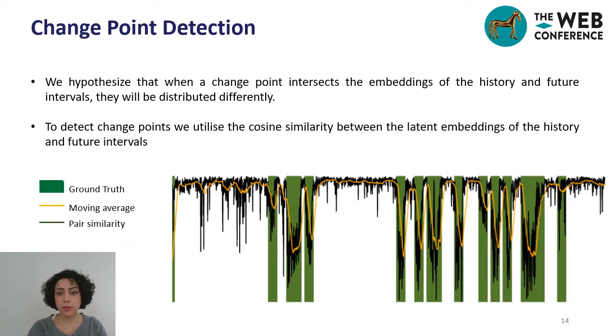We hypothesize that when a change point occurs at either history or future interval, they will be distributed differently. To detect change points, we utilize the cosine similarity between the predicted latent embeddings based on history and future intervals across the entire time series. A valley-picking algorithm is used to detect local minima that fall below a predefined threshold. The threshold is defined based on the average and standard deviation of pair similarity in the whole dataset. The intervals associated with this local minima will be detected as change point estimates.